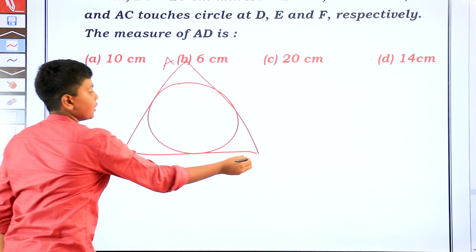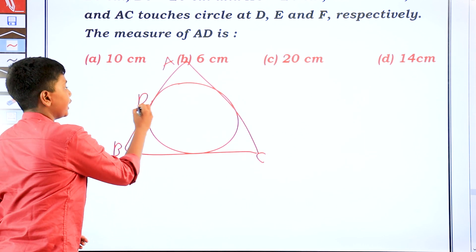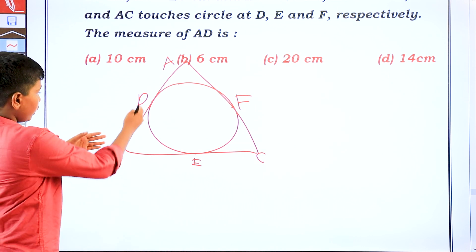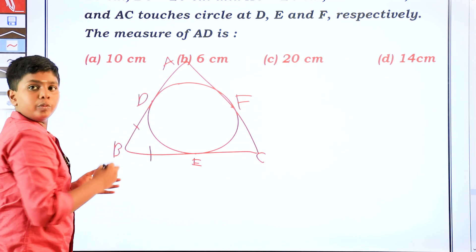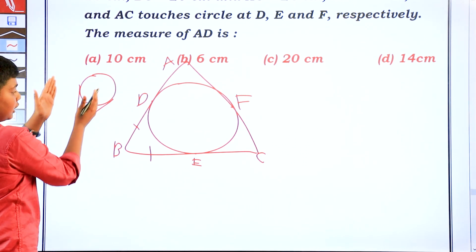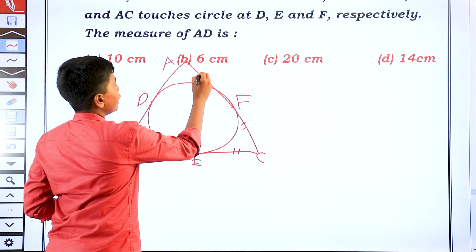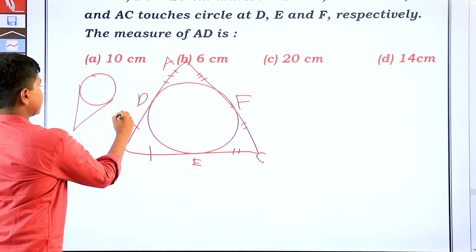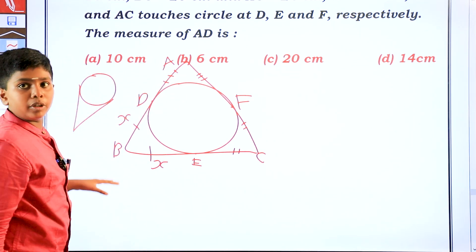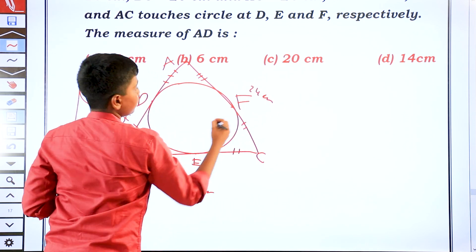The triangle is ABC with the inscribed circle touching each side. The point on AB is D, on BC is E, and on AC is F. We let AD equals x. Then using the tangent length property: AB is 16 cm, BC is 20 cm, and AC is 24 cm.